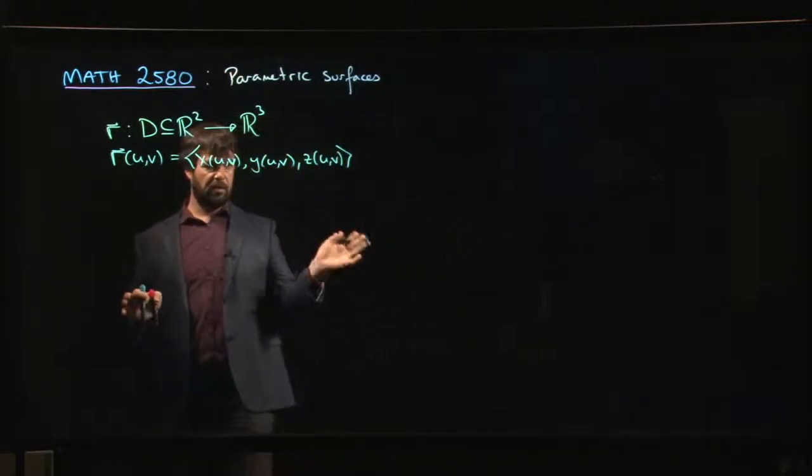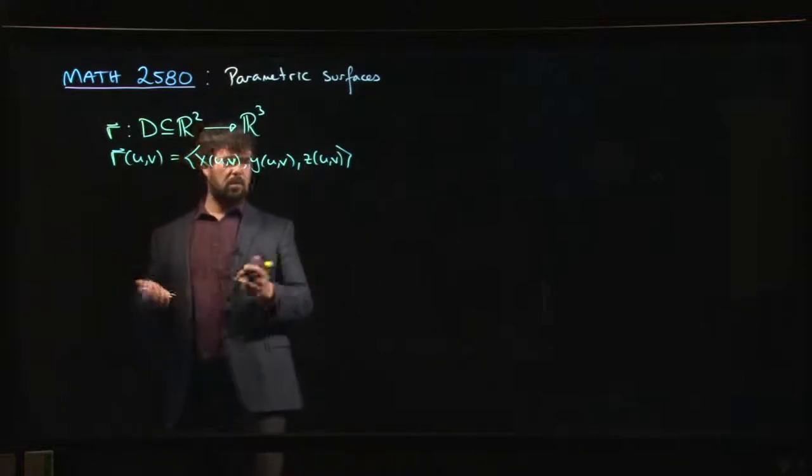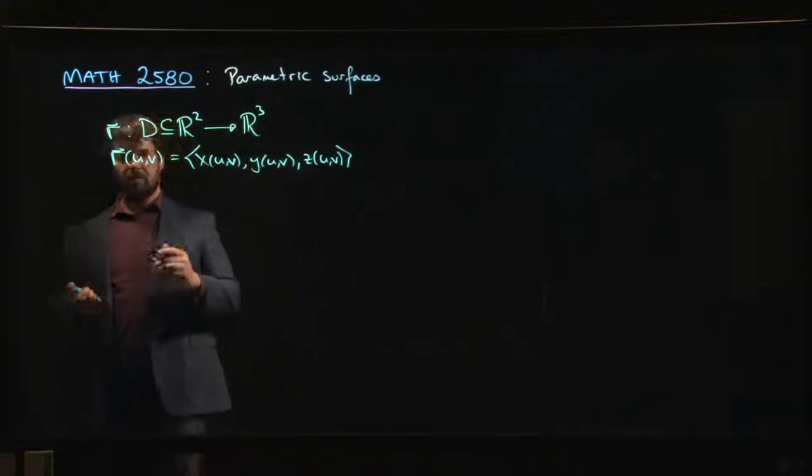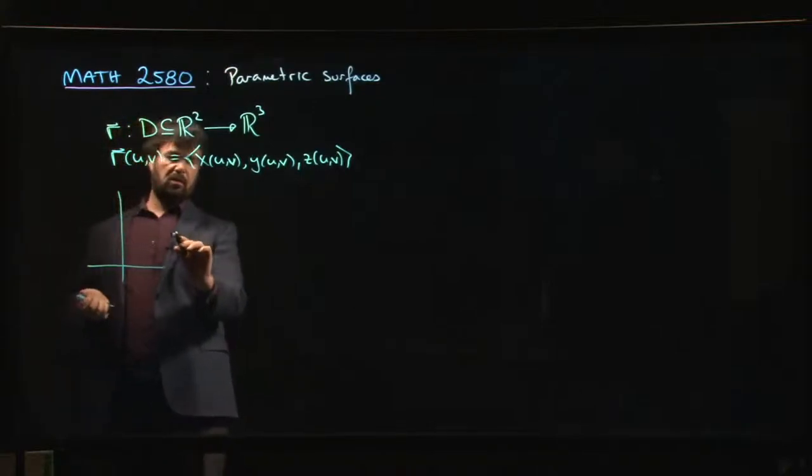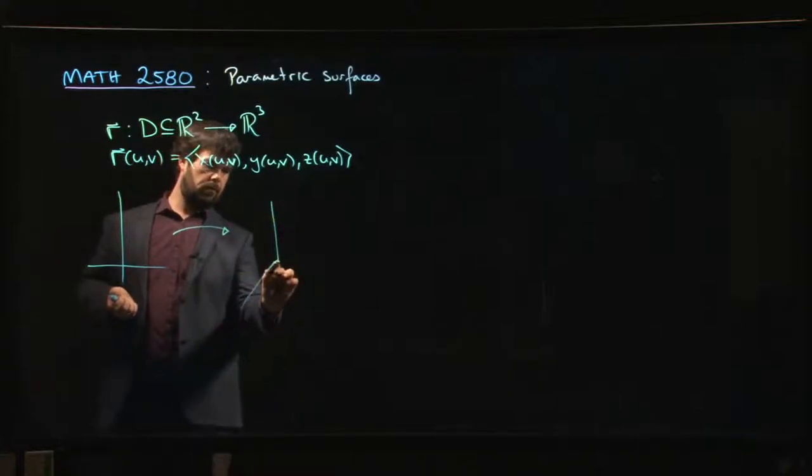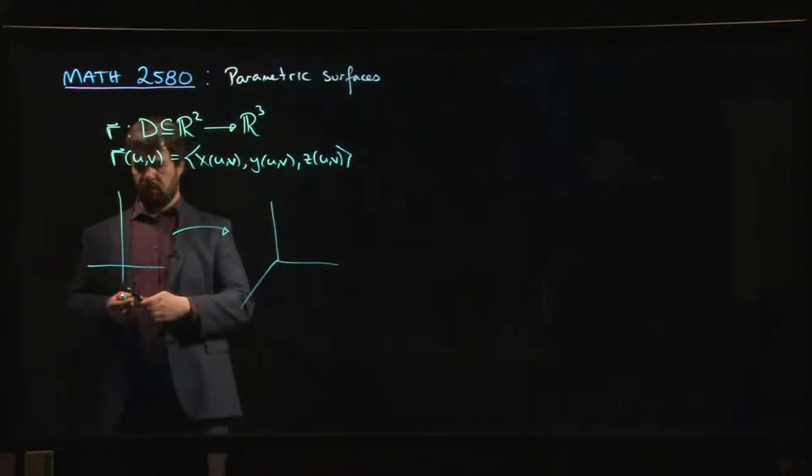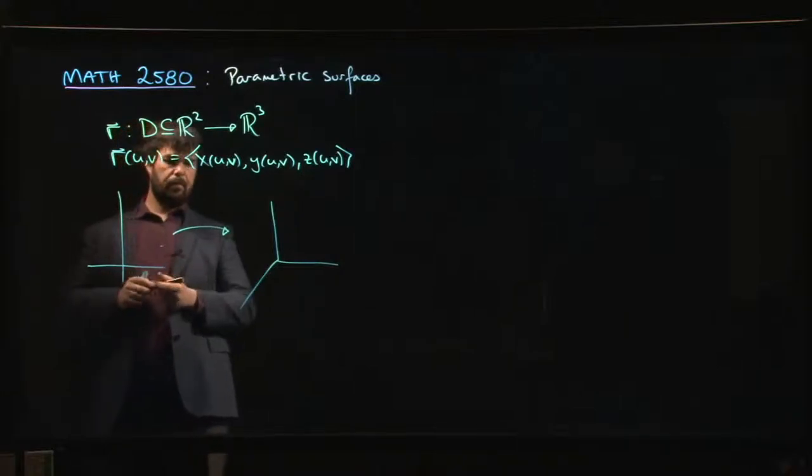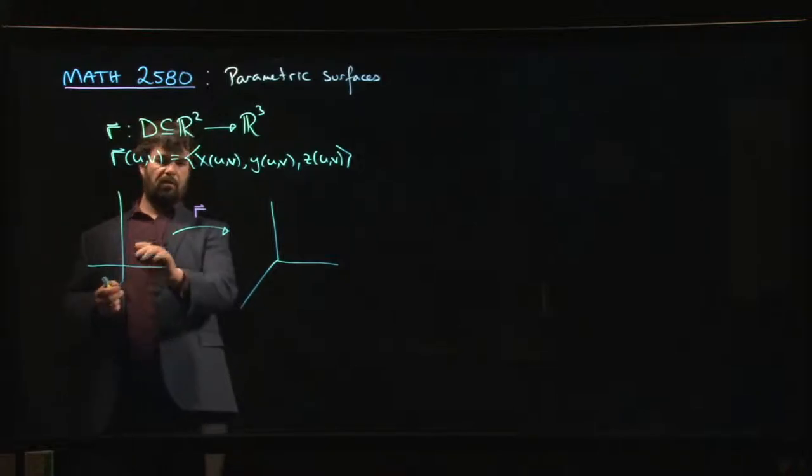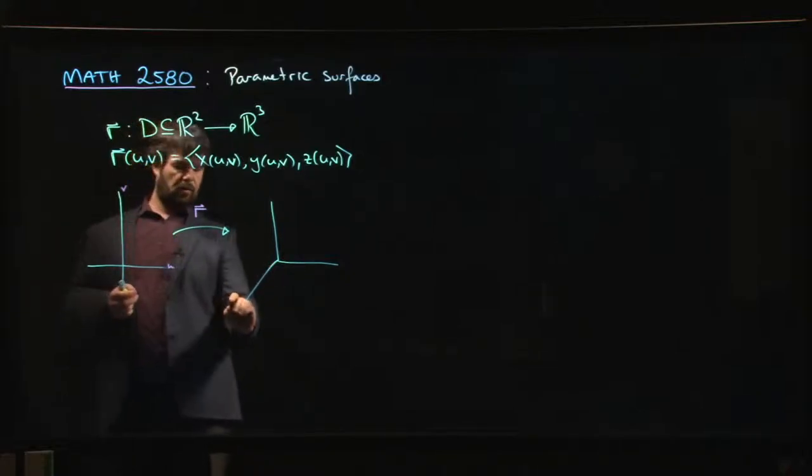For some reason I feel like u and v should be the default. So the idea is you got this sort of scenario here. R is your mapping going from R² to R³.